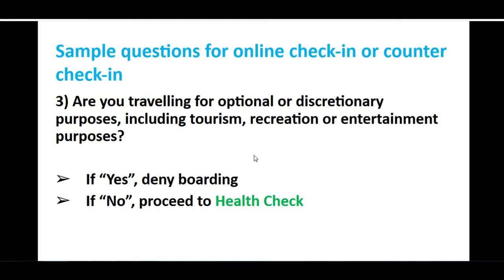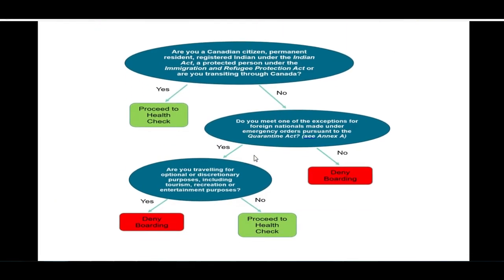Now let's look at the decision tree model explained by the Government of Canada — it is very similar to what we discussed. The first question: if you are a citizen or permanent resident, you are directly allowed for health checking. If you are not, it asks whether you fall under an exception or essential category. If yes, it then asks if you are traveling for tourism or recreation. If you say no, you are allowed for checking.